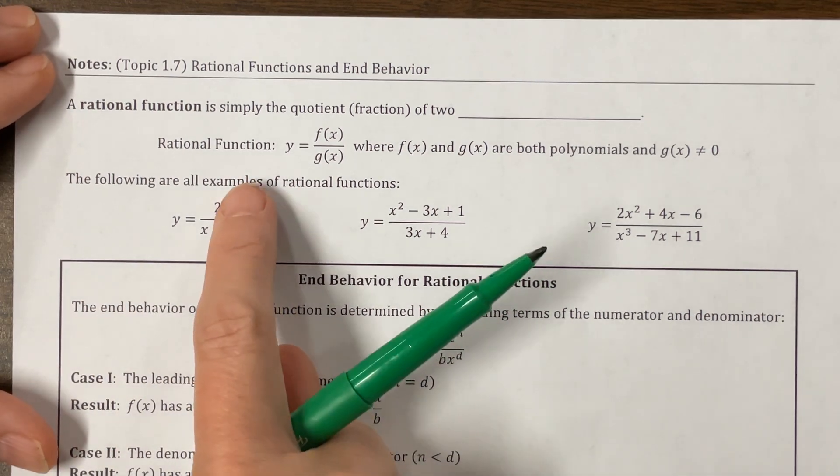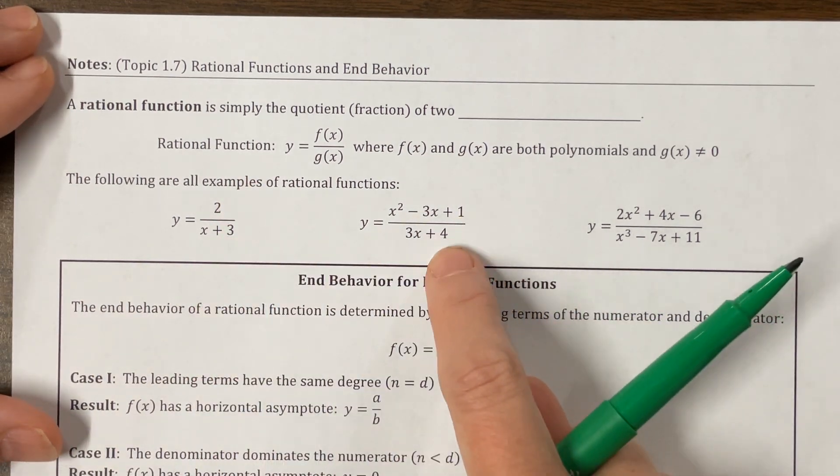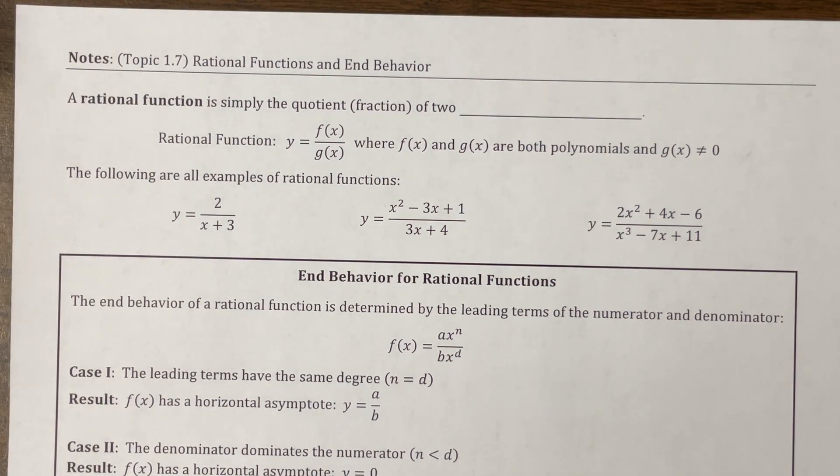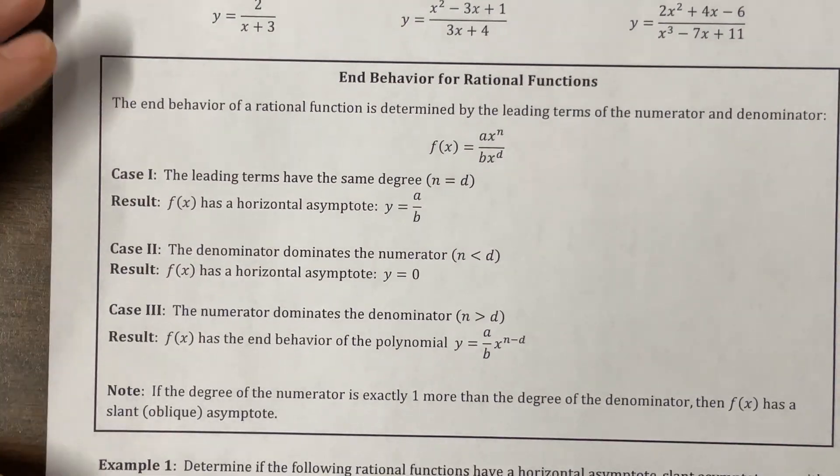Here are some examples. We have a constant over a linear. We have a quadratic over a linear. We have a quadratic over a cubic. All of those are rational functions. Okay, so we are going to talk about end behavior.